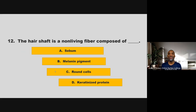The hair shaft is a non-living fiber composed of blank. Is it sebum, melanin pigment, round cells, or keratinized protein? If you chose D, keratinized protein, you are correct.